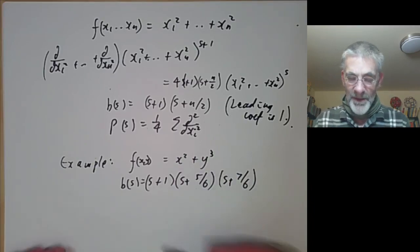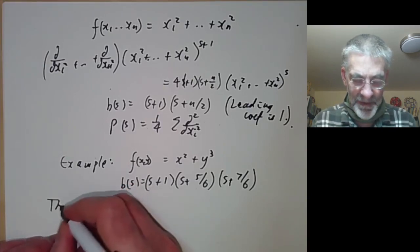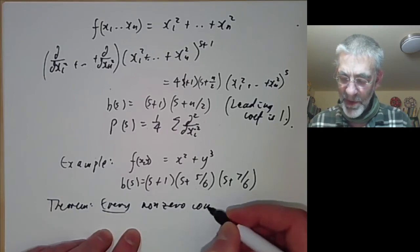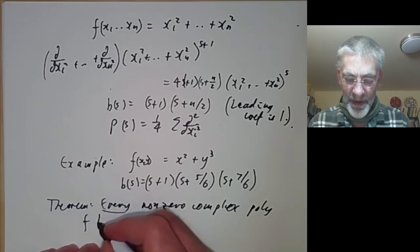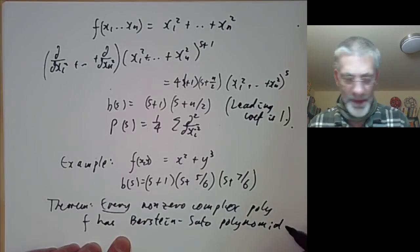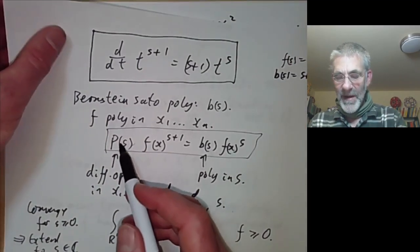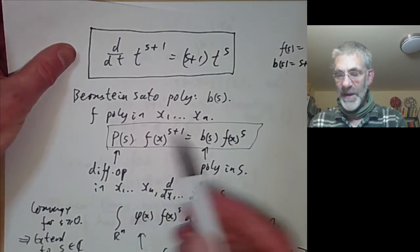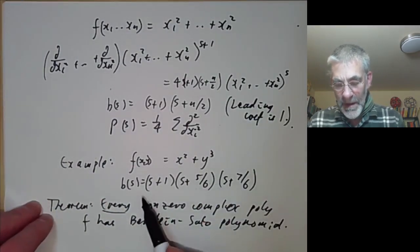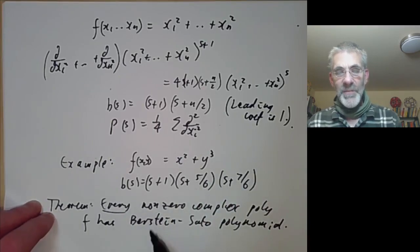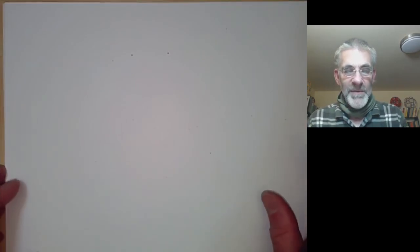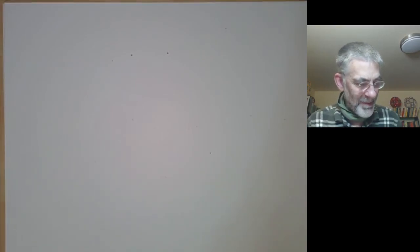The main theorem proved by Bernstein and Sato is that every non-zero complex polynomial f has a Bernstein-Sato polynomial — that is, there exists some differential operator satisfying the functional equation with b(s) not identically zero. I'll explain how to prove this using ideas from commutative algebra in the next couple of lectures, but for this lecture I'll show you that the Bernstein-Sato polynomial is really quite powerful by giving an application of it.